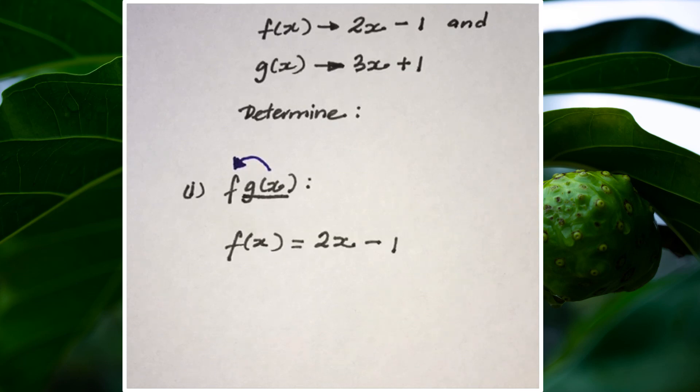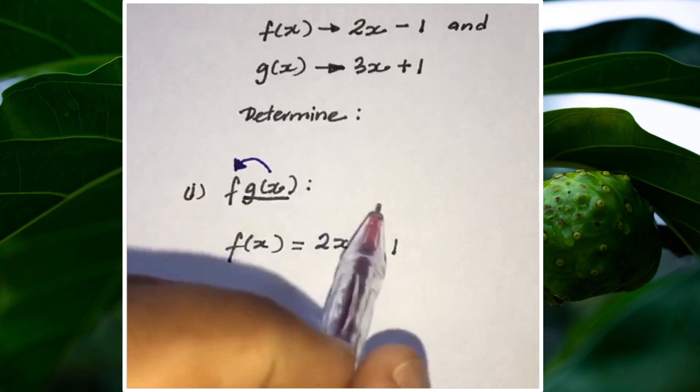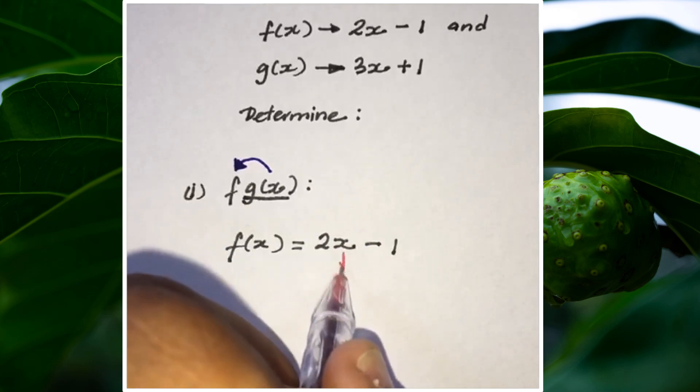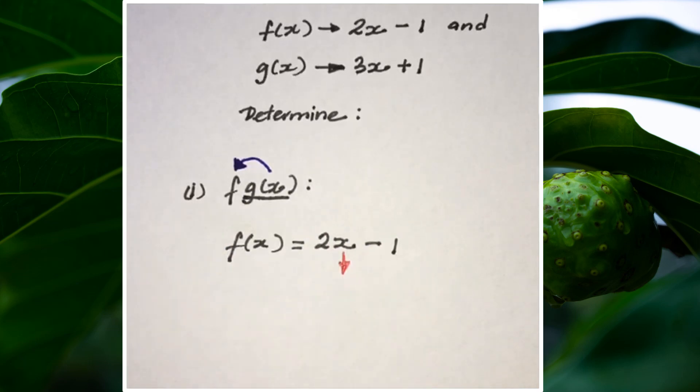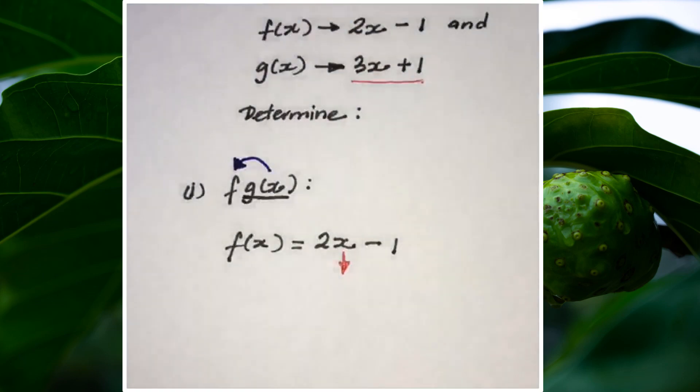This is the function g(x), and I'm going to take g(x) and replace x with it. This is where x is in the function f, and I'm going to put g(x) right there, showing that I'm making a composite function by inserting one function into another.